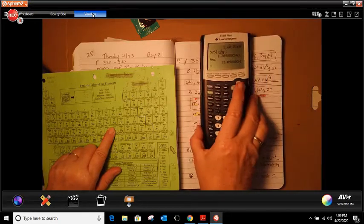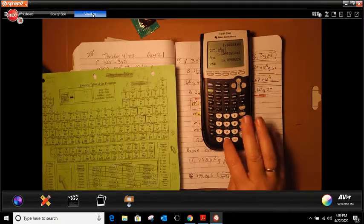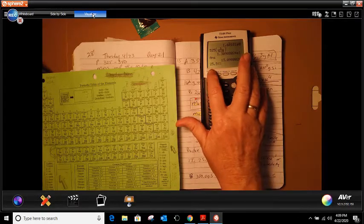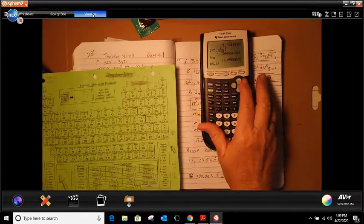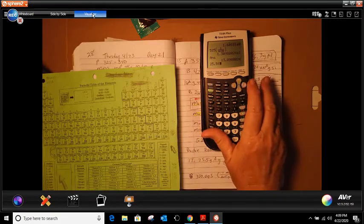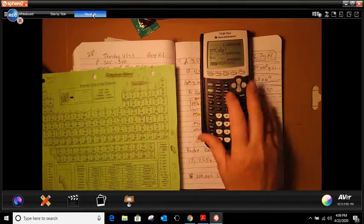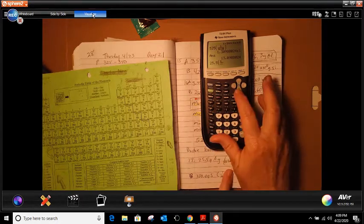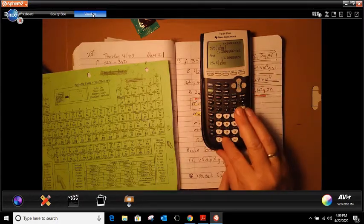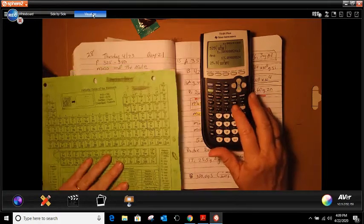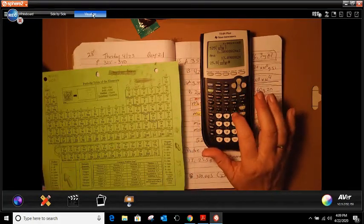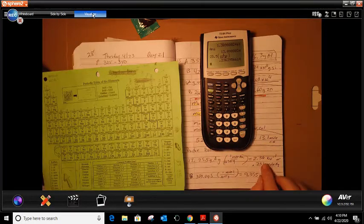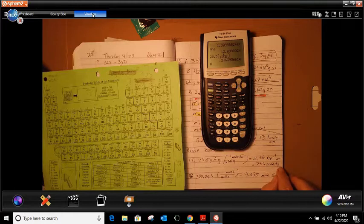So in my calculator, I'm going to do 25.5, open bracket, alpha Y, enter, because it is a fraction. 1 over 107.87. And then I'm going to close my bracket and I'm going to hit enter. That gives me 0.23 moles of AG.